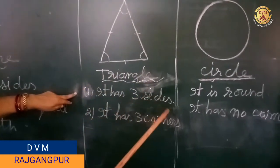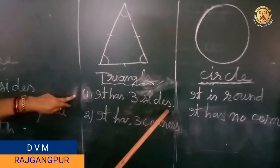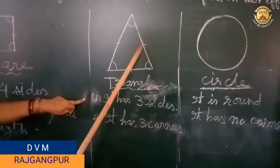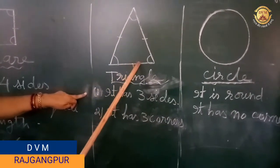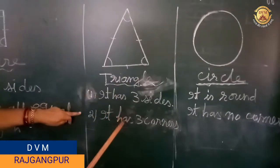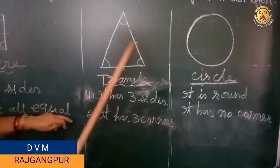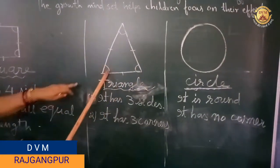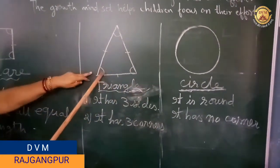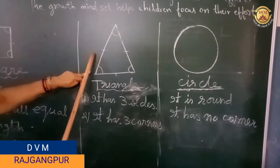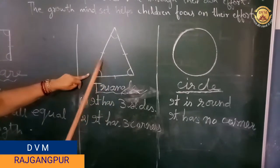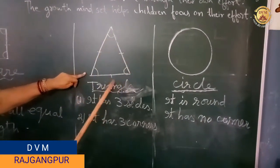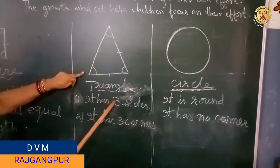This is known as triangle. It has 3 sides — how many sides children? 3 sides: 1, 2, 3. And it has 3 corners: 1, 2, 3. Why is it known as triangle? Because 'tri' means 3 and 'angle' means corner. So it is called triangle.